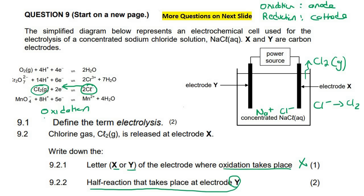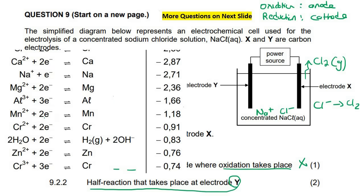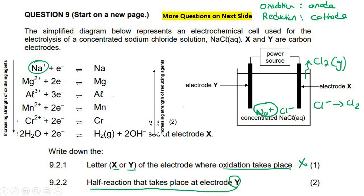Now it says, what is the half reaction that takes place at electrode Y? We've got to be careful because of the water. I have explained this to you guys before where we have the electrolysis of aqueous solutions. So we look at this Na+. Where is that on the table? Well, there it is there. That means we are on the left-hand side of the table.